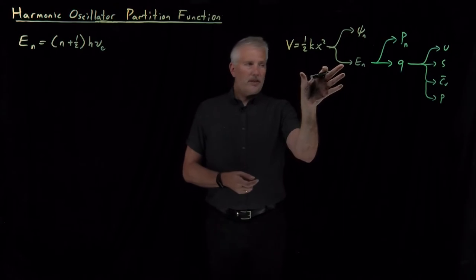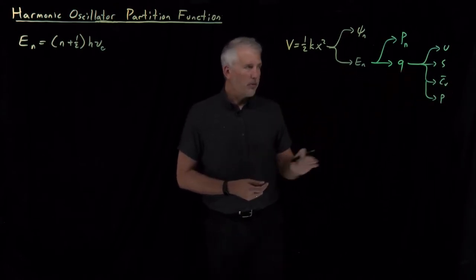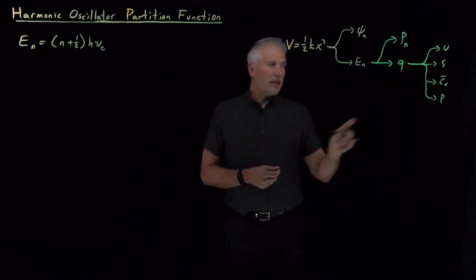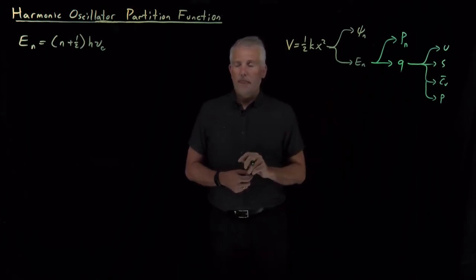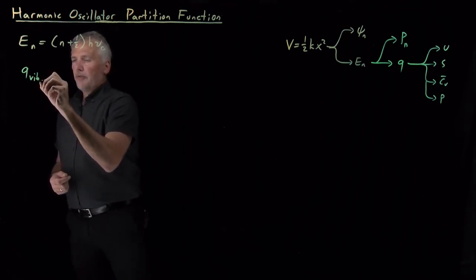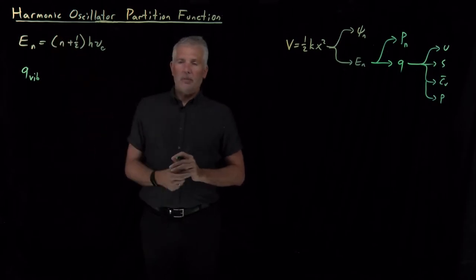Start with quantum mechanics, then do some statistical mechanics, which is our link to get to thermodynamics. So if we want to be able to talk about energies and pressures of vibrating diatomic gaseous molecules, the partition function needs to be our next step. So with these energies, how do we find the partition function for a vibrating diatomic molecule, the partition function for a harmonic oscillator?